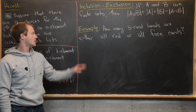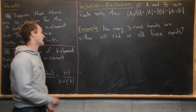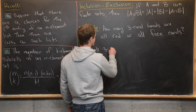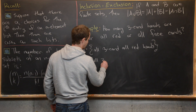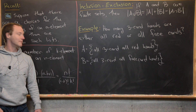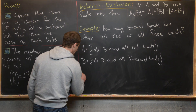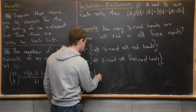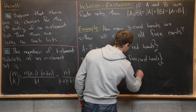For our next example, we're going to count how many three-card hands are either all red (diamonds or hearts) or all face cards. Let's name our sets: set A is all three-card all-red hands, and set B is all three-card all-face-card hands. Our goal is the size of A union B, so using inclusion-exclusion that equals |A| plus |B| minus |A intersect B|.